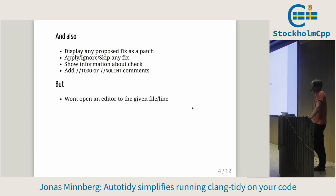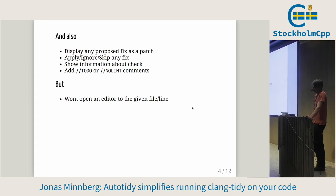Basically what it does is it runs Clang Tidy. For every check, it displays the error, and if there's a fix for it, it will display the fix as a patch. That means you can choose to apply the patch, or skip this check for now, or ignore it. And if you ignore it, it will be added automatically to the Clang Tidy config so it will be ignored in the future. You can also add a to-do or no-lint comment to that line so you can fix it later.